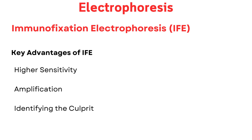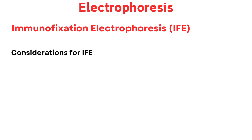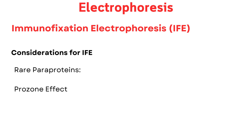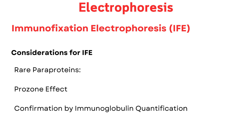IFE not only reveals the presence of paraproteins but also helps identify their type — e.g., IgG, IgA, IgM. It can detect situations where more than one abnormal protein is present or when free light chains (fragments of immunoglobulins) are produced alongside intact immunoglobulins. Considerations: rare paraproteins might require specific anti-sera; very high concentrations of paraproteins can cause a prozone effect, requiring sample dilution. IFE can also be used with immunoglobulin quantification to confirm overproduction of a specific immunoglobulin class and aid in proper sample dilution.